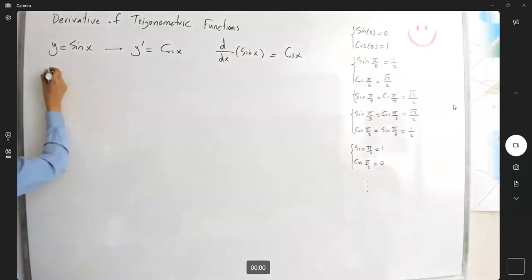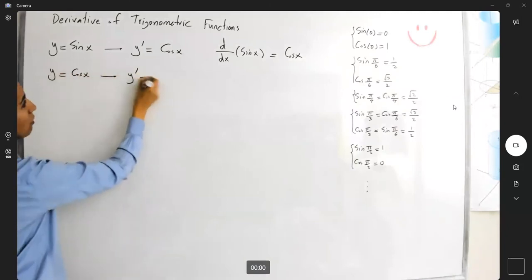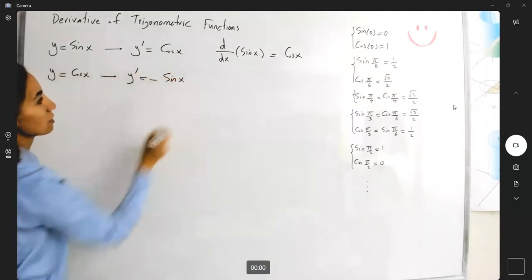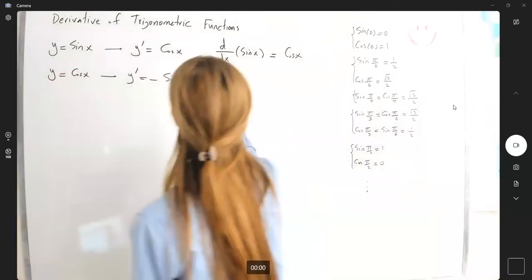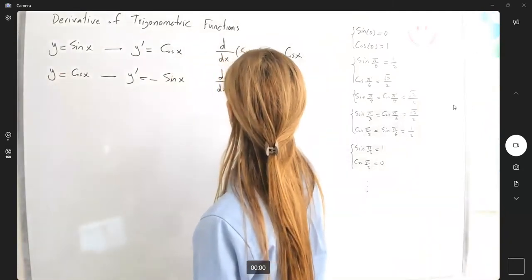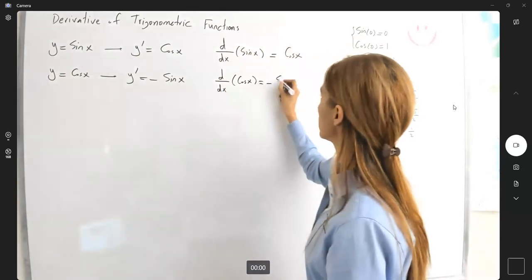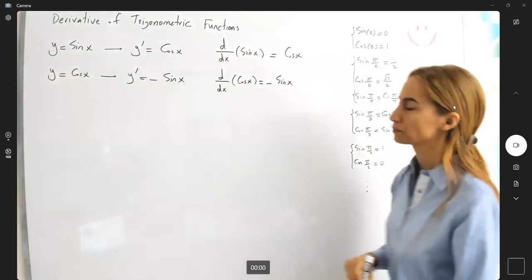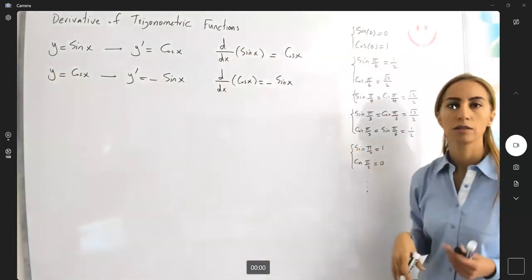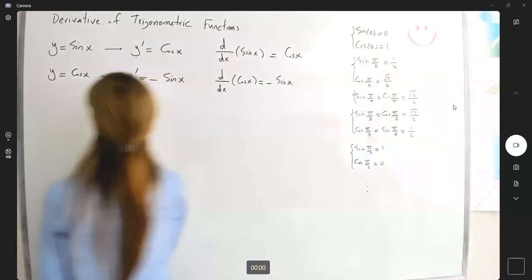If y is equal to cosine of x, then the derivative is defined as negative sine x. Or d/dx of cosine x is minus sine x. So these two are not really complicated to calculate.